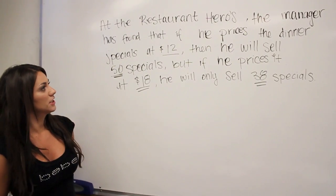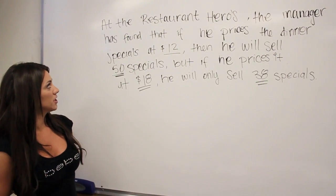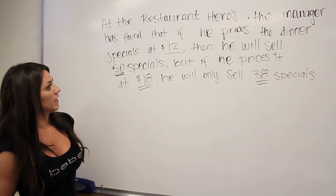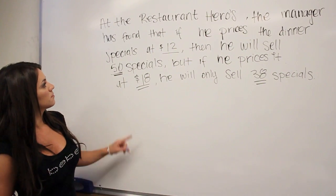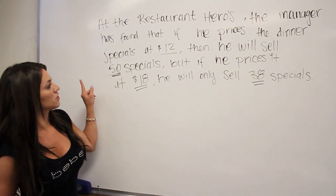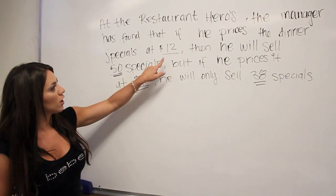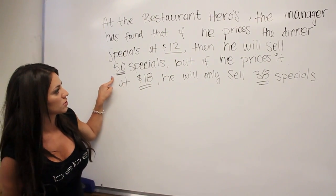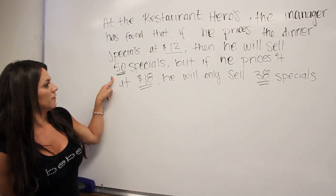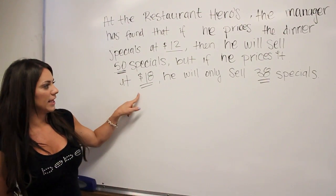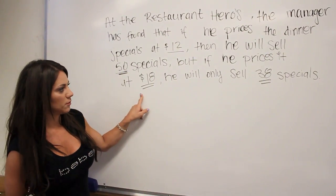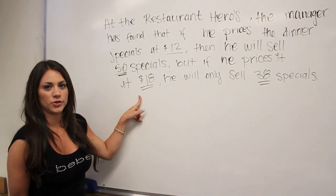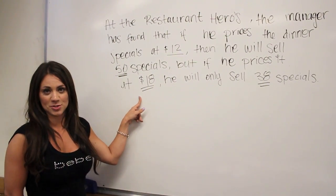At the restaurant Heroes, the manager has found that if he prices the dinner special at $12, then he will sell 50 specials. But if he prices it at $18, he will only sell 38 specials.